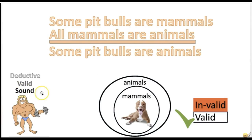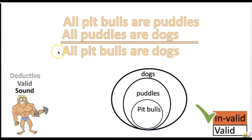Now, if this were invalid — it didn't support the conclusion — or one of these were false, you would have an unsound argument. Remember that argument with 'all pit bulls are poodles'? That argument is invalid, therefore it's unsound. All invalid arguments are unsound. And this argument is also unsound because it has a false premise: 'all pit bulls are poodles.' A sound argument is a perfectly good deductive argument — the premises are true, they support the conclusion, so the conclusion is true as well.